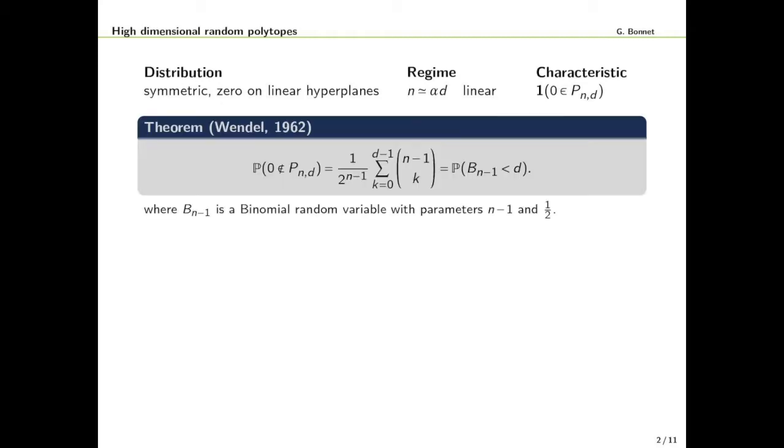This setting is completely understood thanks to a result of Wendel in 1962, which says that the probability that the origin is not contained in the convex hull is precisely the probability that a binomial random variable with parameters n-1 and 1/2 is strictly smaller than d. This is a remarkable result because it has a combinatorial flavor and it's very surprising that it requires only this little assumption on the distribution.